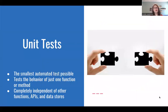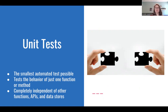Let's start with unit tests. Unit tests are the smallest automated test possible. They test the behavior of just one function or method. They are completely independent of other functions, APIs, and data stores. A unit test will never call the database or an outside API. We're just testing the logic of the code. If a test needs some kind of response, that response would be mocked instead of actually contacting a data store or server.